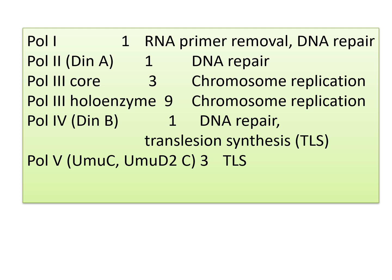Among the 5 prokaryotic DNA polymerases — 1, 2, 3, 4, and 5 — polymerase 1 is mainly responsible for repair and primer removal, polymerase 2 is in the repair system, and polymerase 3 is responsible for chromosomal replication. Polymerases 4 and 5 are mainly involved in repair and have no role in the replication process. So among the 5, polymerase 3 is the prime enzyme, polymerase 1 also supports replication, while the others are mainly involved in repair.